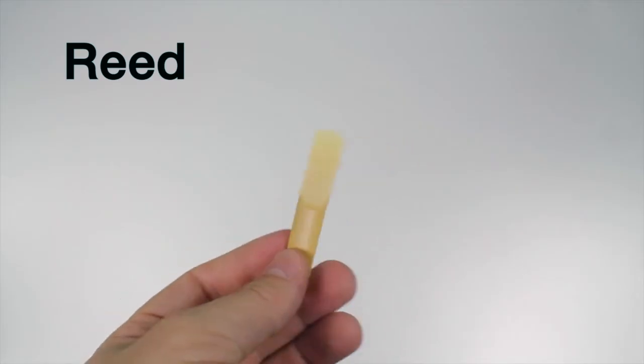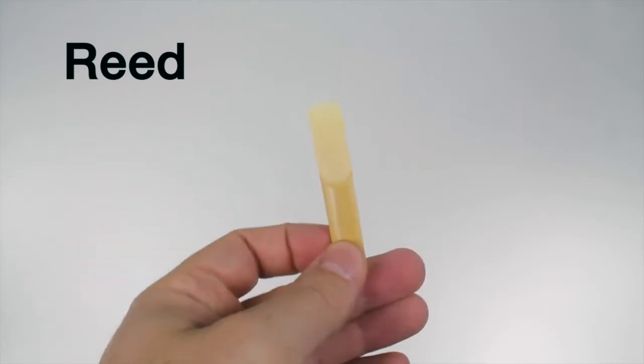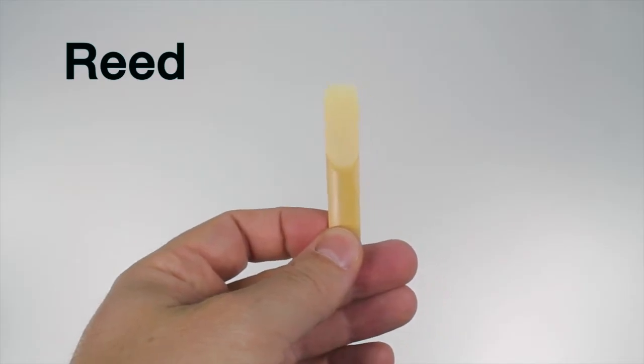This is a reed. A reed is a small, thin piece of wood-like material that's used by woodwind instruments in order to make a sound.